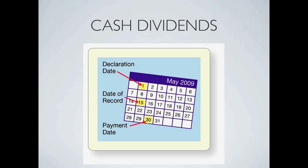The payment date — May the 30th in this case — is the date that the dividend is actually paid out to the stockholders.